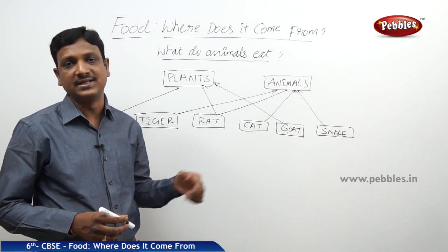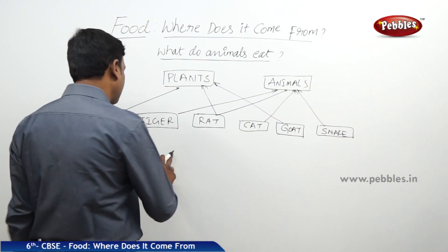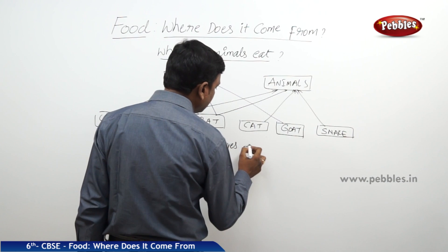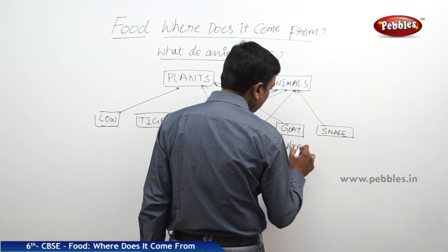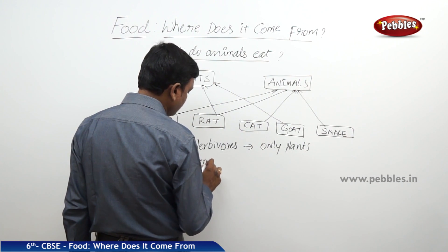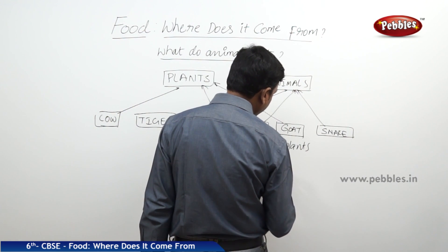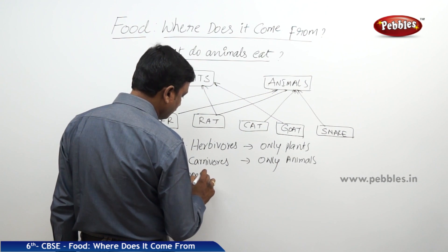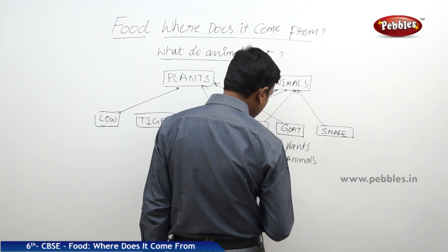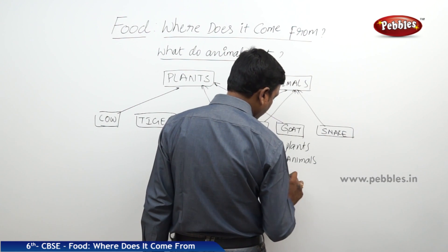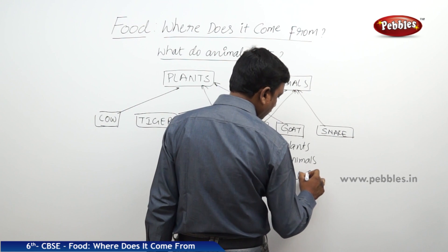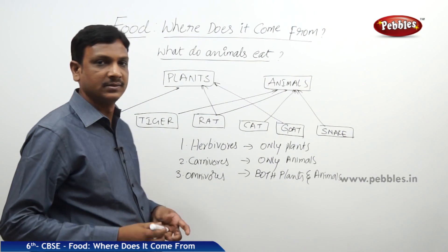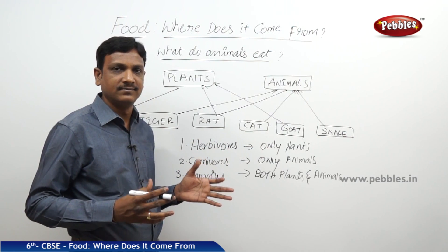Some animals eat both plant as well as animal foods. Based on their food habit, animals are categorized as herbivores — animals which eat only plants; carnivores — animals which eat only other animals; and omnivores — animals which eat both plants and animals. This is how animals choose their food.